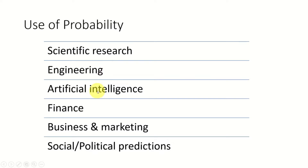Another area where probability is heavily used these days is AI. When it comes to non-AI based applications, we can use formal logic. But when it comes to processing fuzzy logic, we need to rely on probability and statistical concepts to come up with the best possible solution. Finance, business, and marketing is another area where we can use probability — when it comes to analyzing marketing trends and calculating risk. And also, when it comes to research in social and political aspects, we have to rely on probability and statistics.